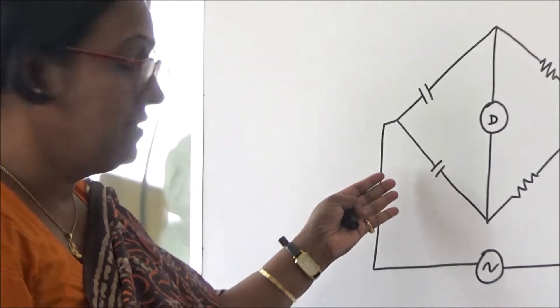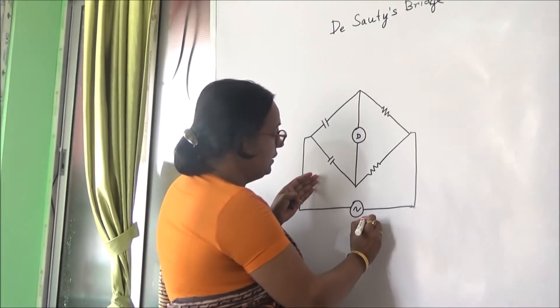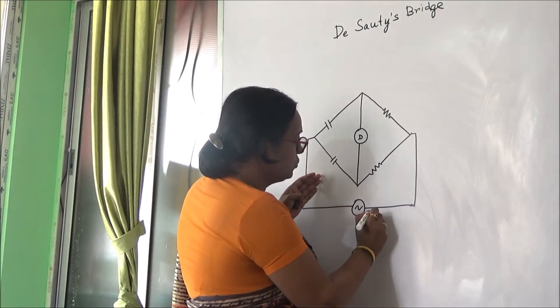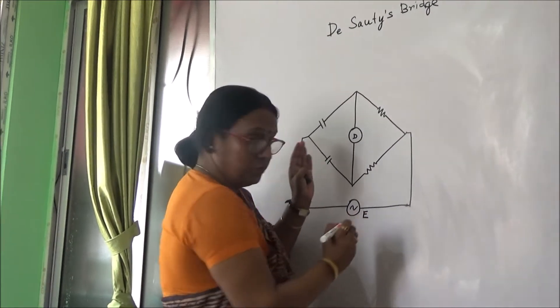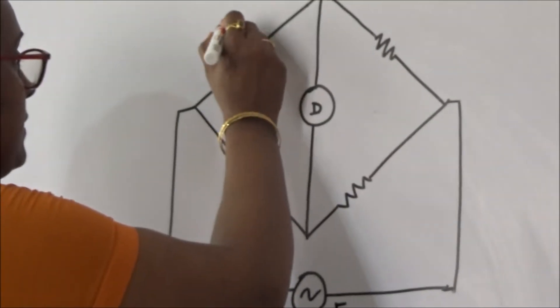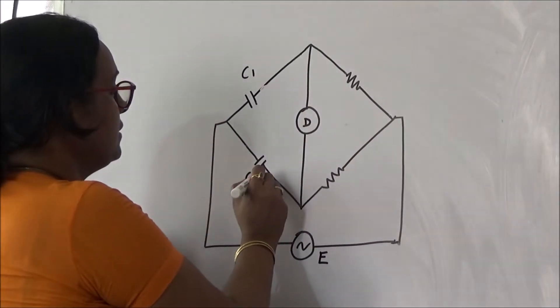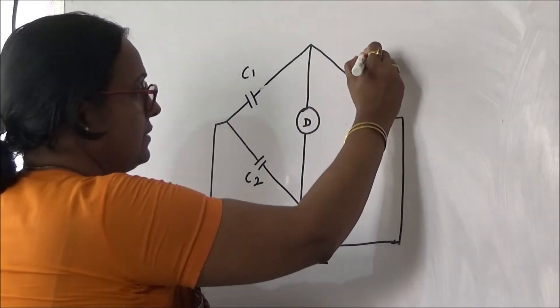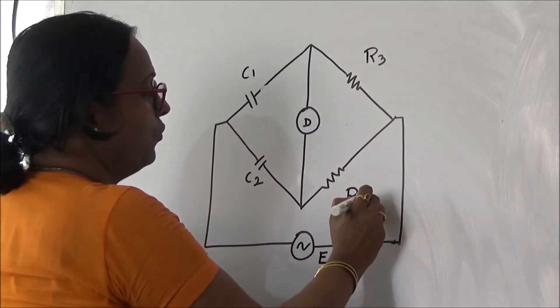Here we can see the figure. This is an alternating source connected to this bridge. This is capacitance C1, this is capacitance C2, this is R3, this is R4.